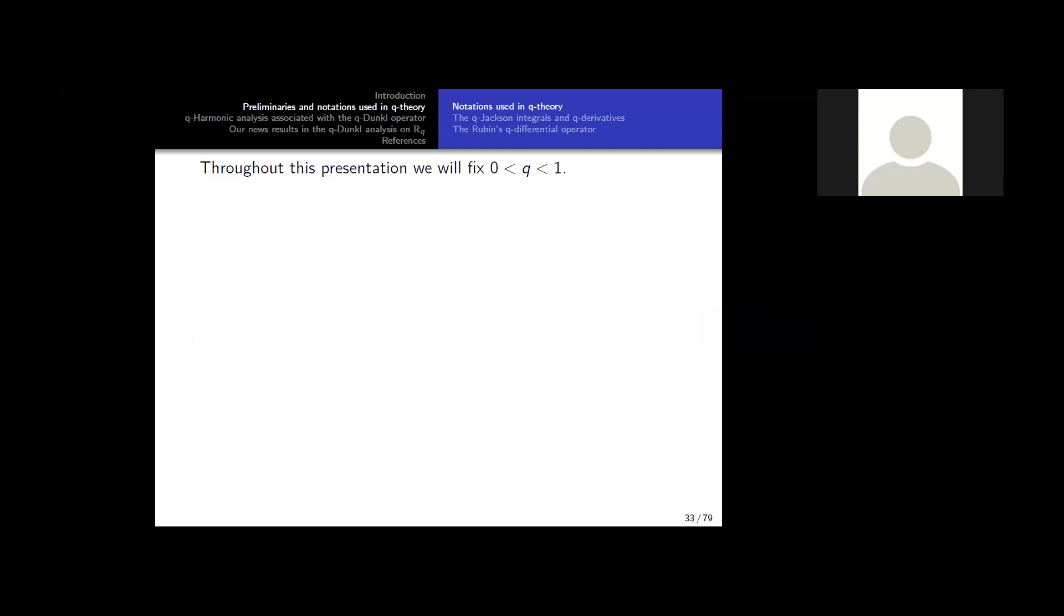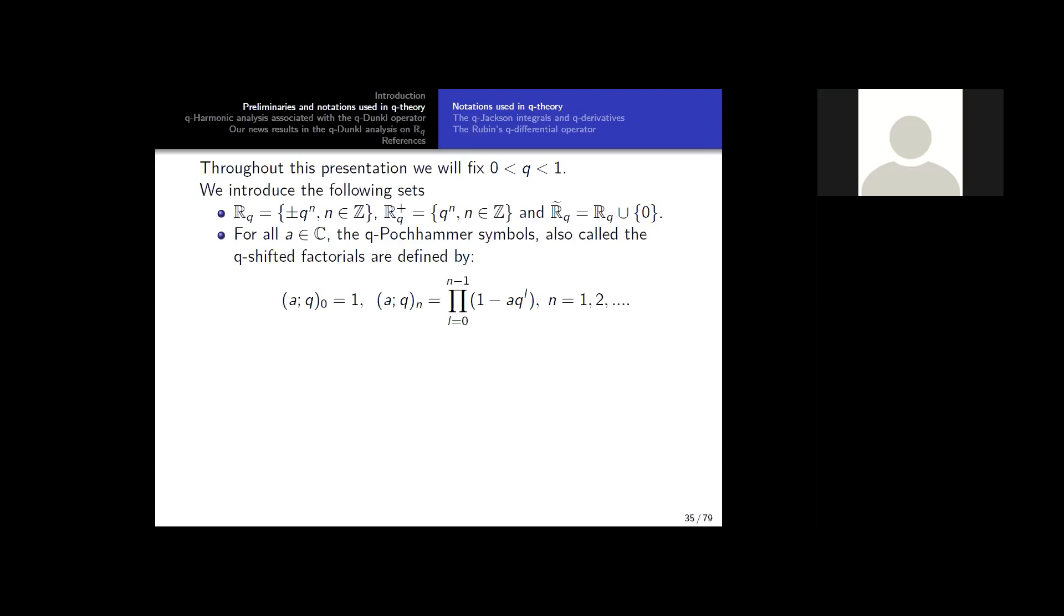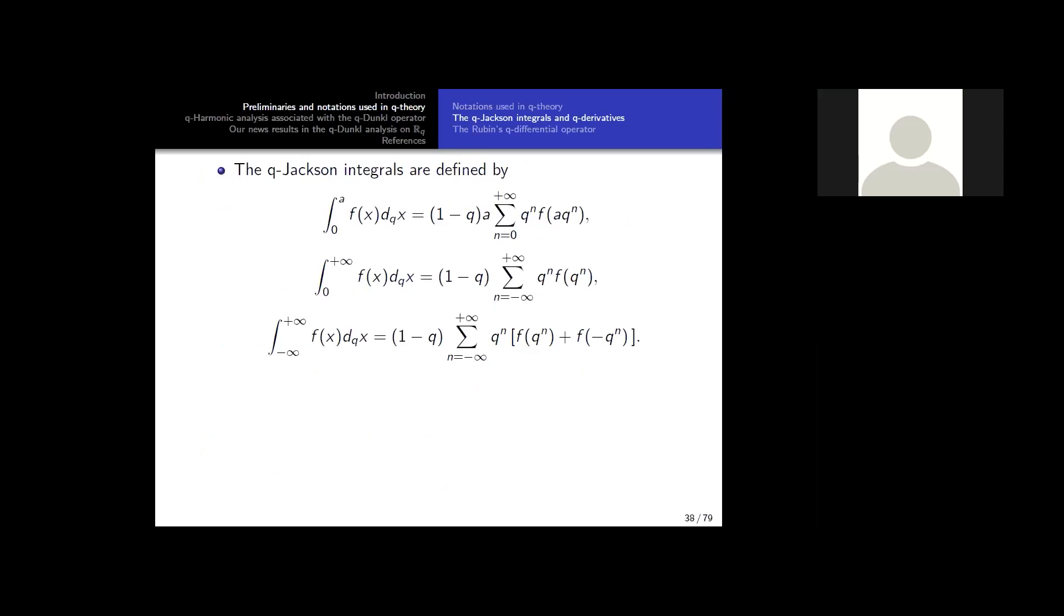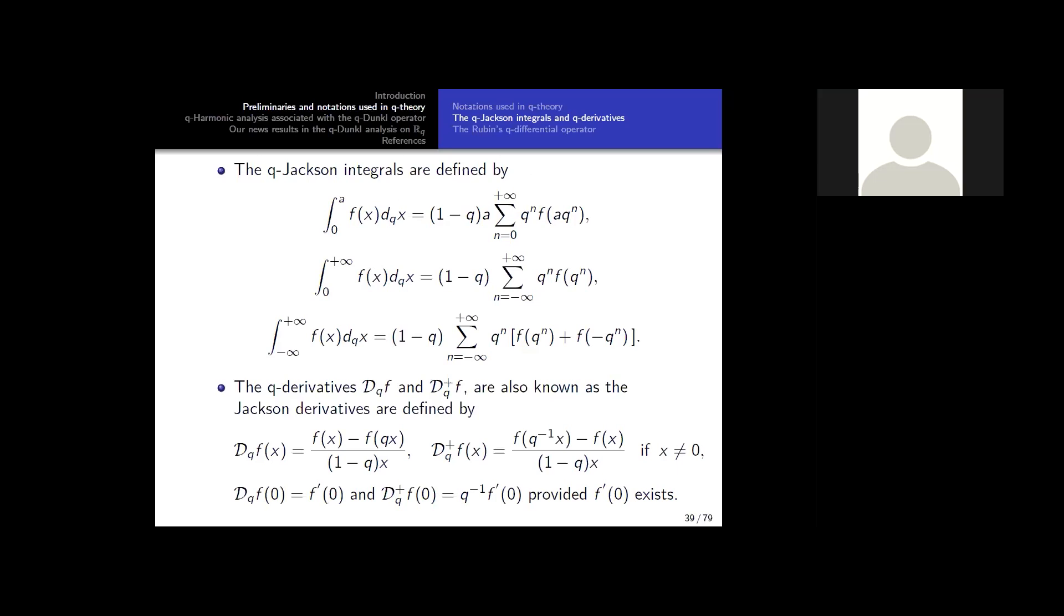Here I will introduce the basics that we use. You can find some references. So you choose Q between zero and one. We use Q-shift and also some Q-factorial like that, and some Q-gamma function. There is the definition of Jackson integral or Q-calculus. And there is also the Q-derivative, also called the Jackson derivative. So here is the derivative of Jackson.